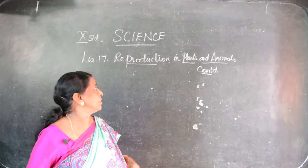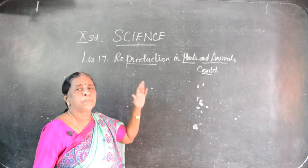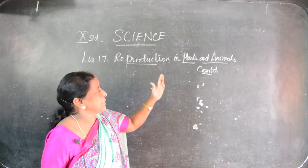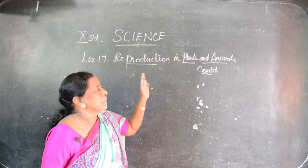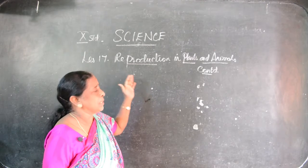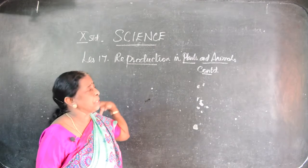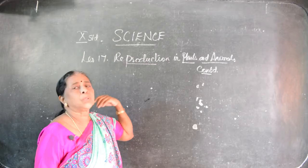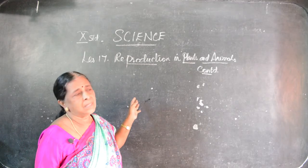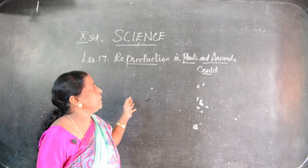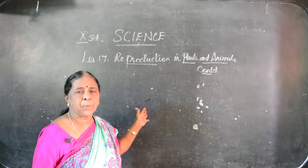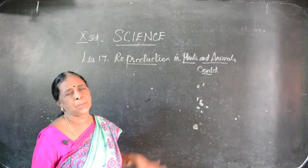Let me continue the class. In the previous session we have seen reproduction in plants and animals — what is reproduction, what are the kinds of reproduction, what is vegetative reproduction in plants. Now we have to see asexual reproduction and sexual reproduction.